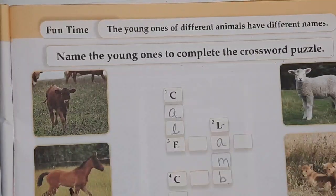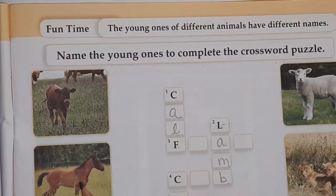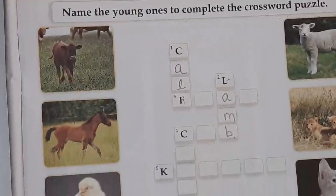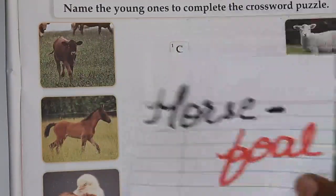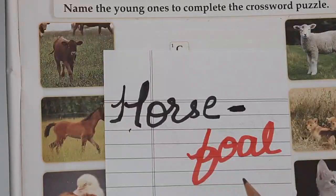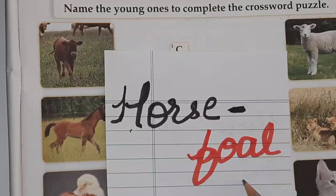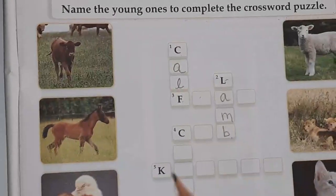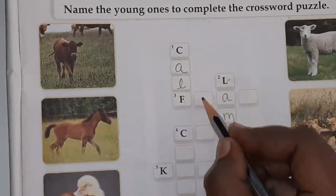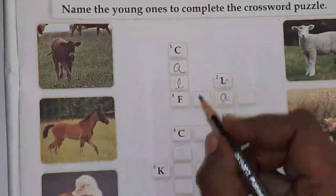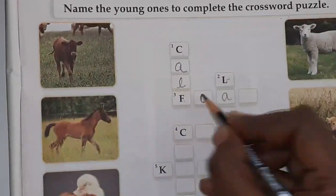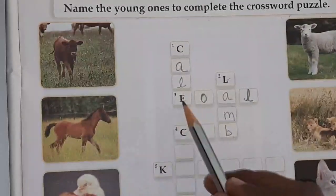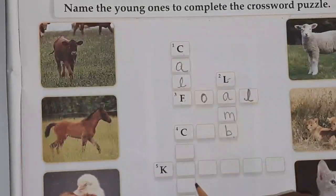So let's see the third one. Here you can see the young one of horse. Young one of the horse is foal. So we write: F-O-A-L. Foal.